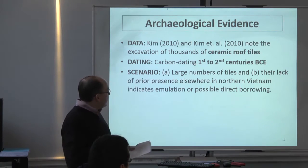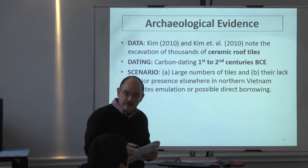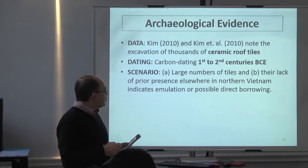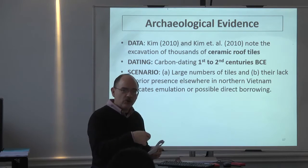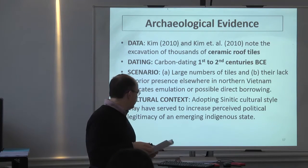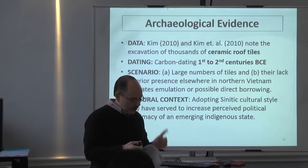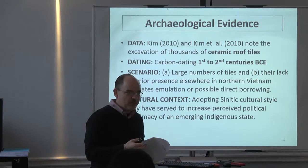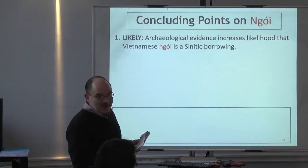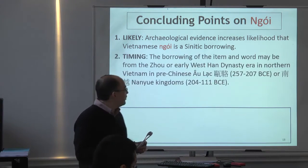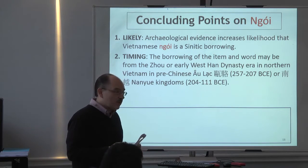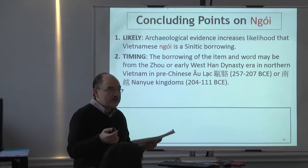Archaeological evidence: a recent study found thousands of ceramic roof tiles dating to this earlier period — much earlier than the first century, more like the second century BCE. Large numbers of tiles appear concentrated in that period and don't appear elsewhere. In the context of increasing political status and legitimacy in this emerging state, there are no Chinese characters on the tiles, but they're evidently Chinese style — a modeling of things. I can hypothesize — and hypothesize means one can argue against it — that this increases the likelihood that the word 'ngoi' is a Sinitic borrowing that may have come as early as around 200 BCE. As far as I can tell, that's the earliest evidential evidence of an Old Chinese loan. I haven't found anything from the Warring States period — this is very beginning of Western Han.